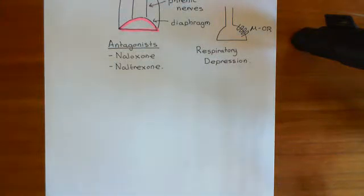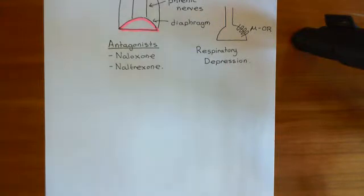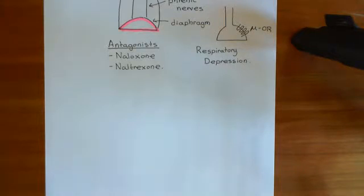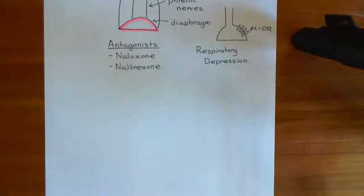Welcome to this next video in which we are discussing the opioid receptors. We now want to discuss why opioids such as morphine have such powerful analgesic effects. To do this, we need to look at the ascending pain pathways — how the signal of pain gets up to the brain — and also the descending pathways which regulate how pain passes up to the brain, because all of this is important in how opioids take their effect.